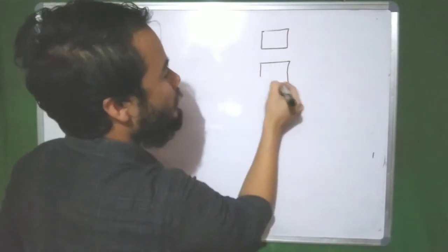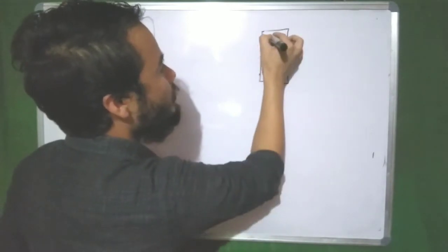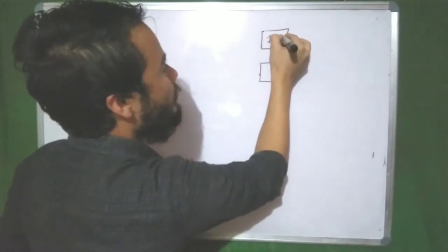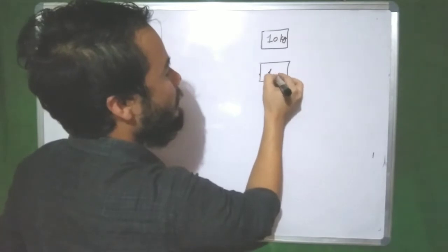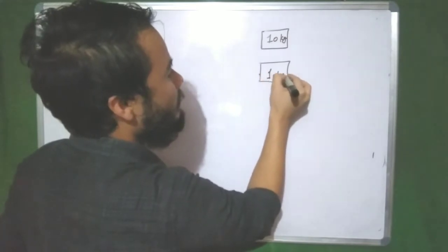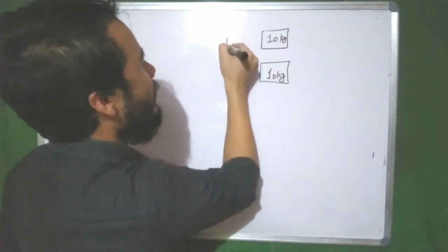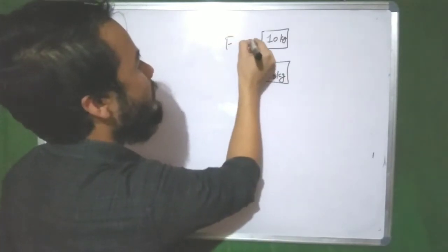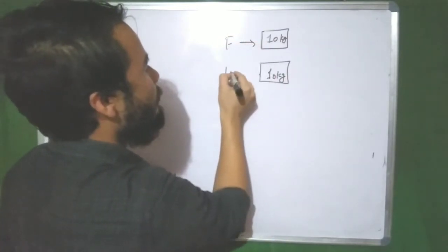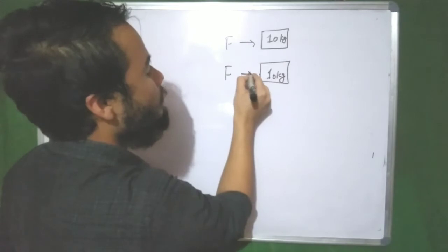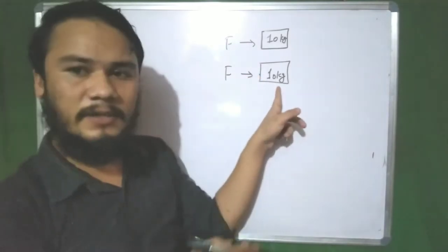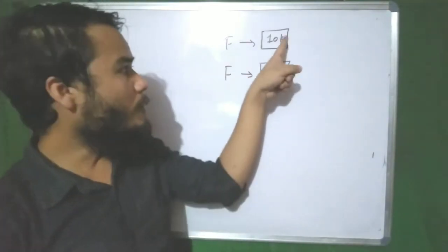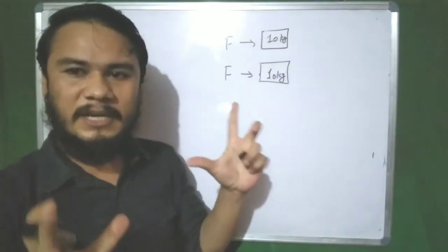Second method: by using the relation of force, mass and acceleration. If we have the same object with mass 10 kg, we have to apply a certain amount of force on them.